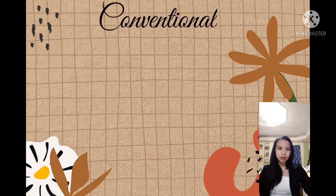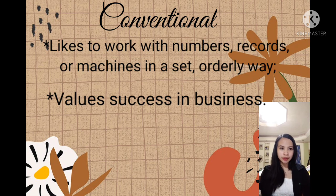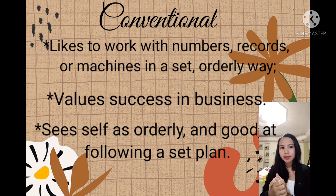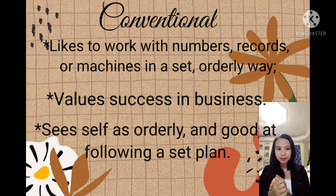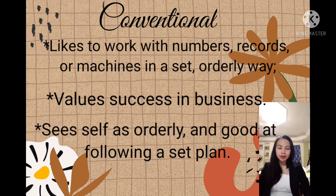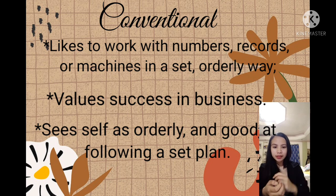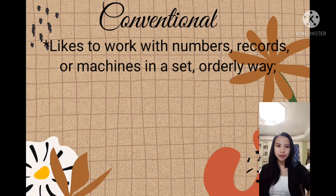The last one is conventional: likes to work with numbers, records, or machines in a set, orderly way. Generally avoids ambiguous and unstructured activities. Good at working with written records and numbers in a systematic, orderly way. Values success in business and sees self as orderly and good at following a set plan. These are people who like to work with data, are organized, want everything planned, and are very strict when it comes to instructions. A good example of conventional is working as a secretary in a company.